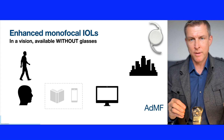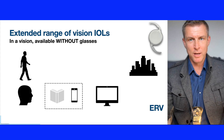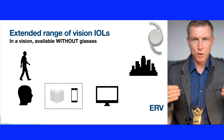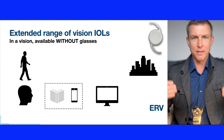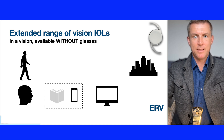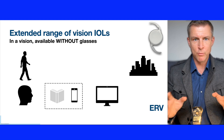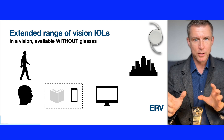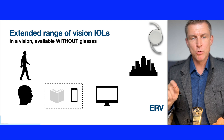The next type is the extended range of vision lens. It provides intermediate vision, normally a bit better than enhanced monofocal, and functional near vision. At near, you can easily use your smartphone and work with notebooks on a smaller distance, but you still cannot read well for a long time. Talking about smartphone use, I'm referring to standard font size. For many cases, you will still need reading glasses for comfortable and prolonged work up close.